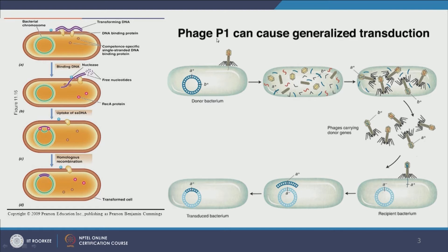Now let us look at transduction. Usually when a bacteriophage — a virus that attacks the cell — attaches to a cell, it secretes its DNA or RNA into the cell, hijacks the cell, forces it to make multiple copies of its own proteins, and then multiple viruses lyse the cell and come out. At times, some bacteriophages when they attack a cell not only force the cell to make their proteins and nucleic acids, but also pick up fragments of the cell's own DNA.